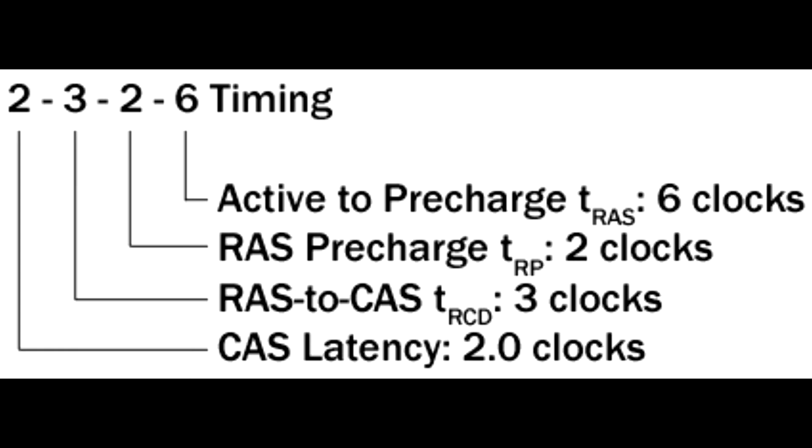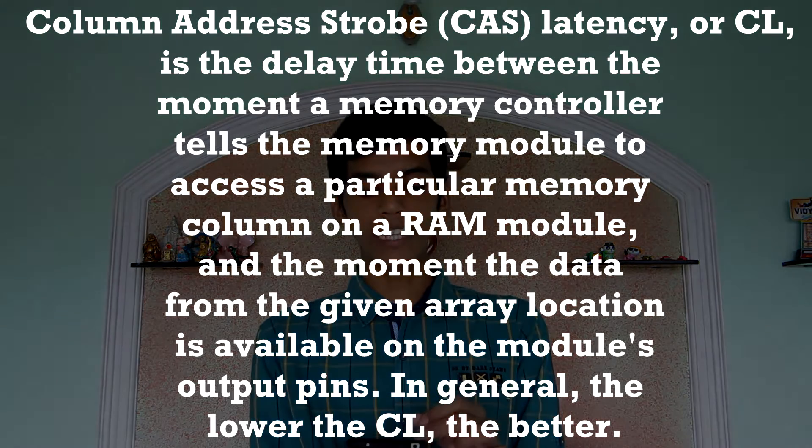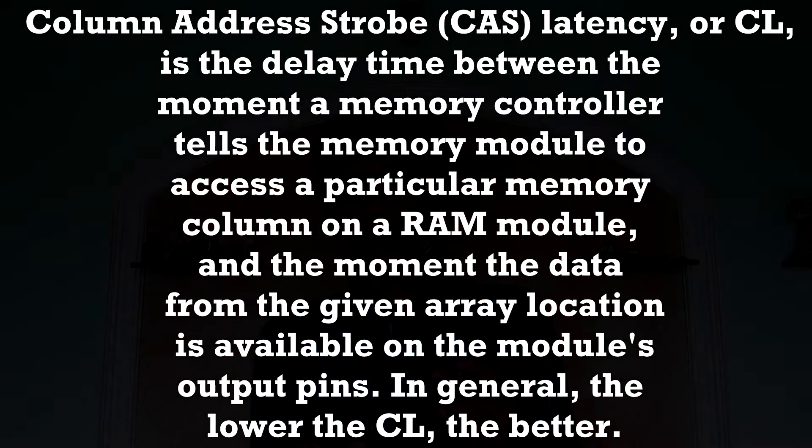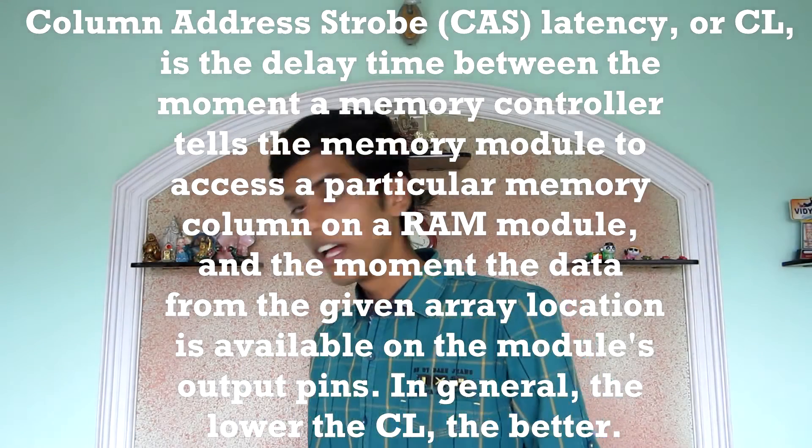One more important thing is cache latency — the four numbers you see on each RAM stick. The first number is the cache latency, the second is TRCD, the third is TRP, and the fourth is TRS. I can't explain all of them in this video — I'll make a separate video for that. According to Wikipedia, cache latency is the delay time between when the memory controller tells the RAM to access a memory column and when the data is returned.